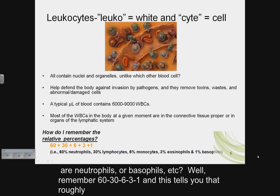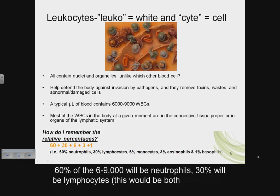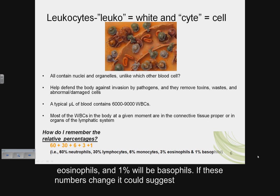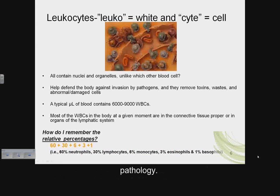Remember 60-30-6-3-1: roughly 60% of the 6,000–9,000 white blood cells will be neutrophils, 30% will be lymphocytes (both B and T cell populations together), 6% will be monocytes, 3% will be eosinophils, and 1% will be basophils. If these numbers change, it could suggest pathology.